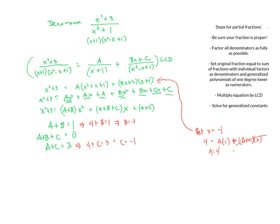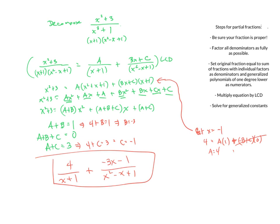So the full decomposition is 4 over x plus 1 plus negative 3x minus 1 over x squared minus x plus 1. A quick note on why this is useful: when finding anti-derivatives of complicated fractions, partial fraction decomposition lets us break a complicated fraction into a sum or difference of simpler fractions whose anti-derivatives we can find separately.